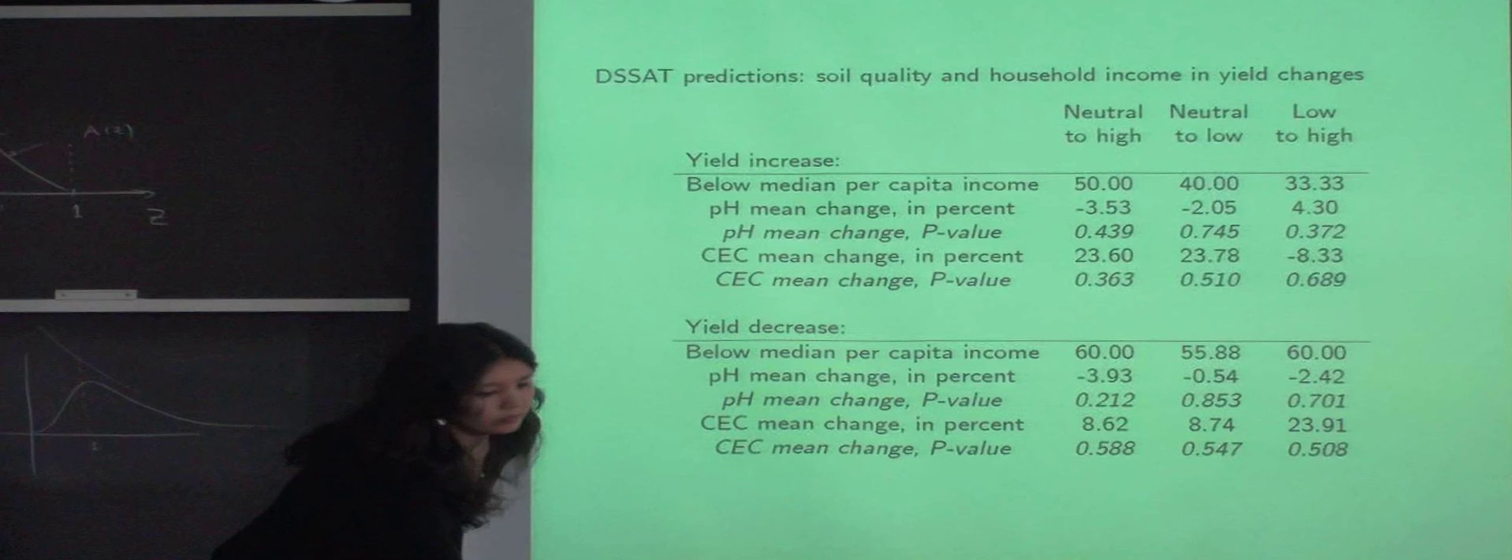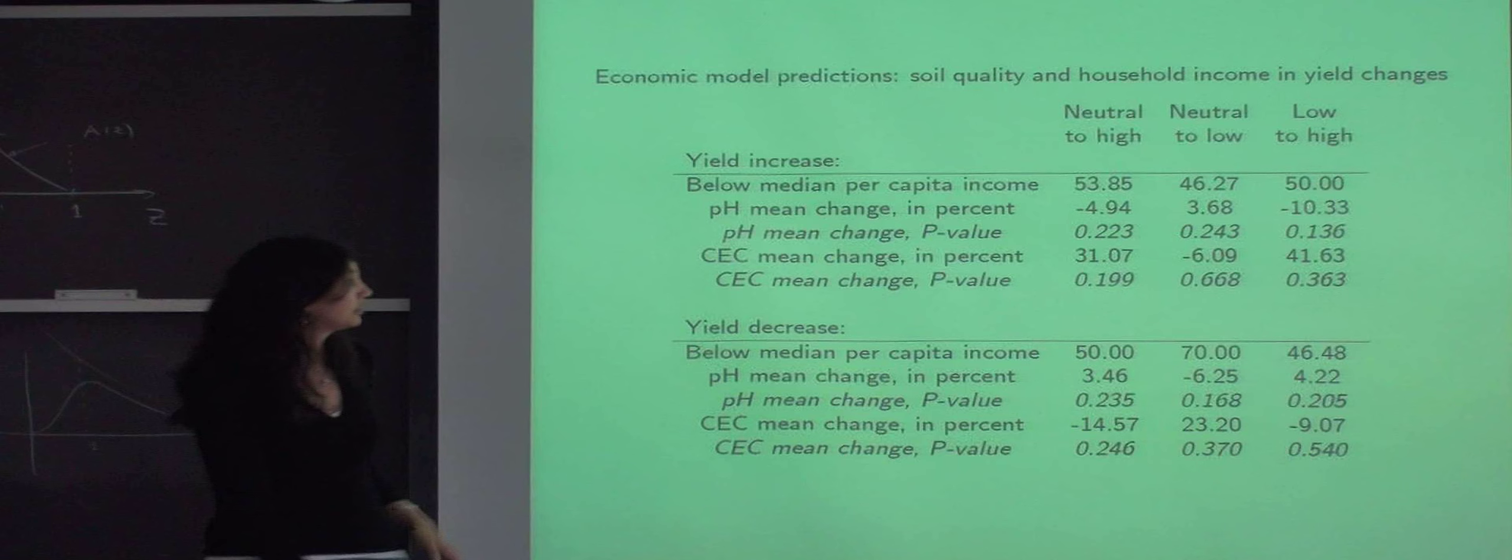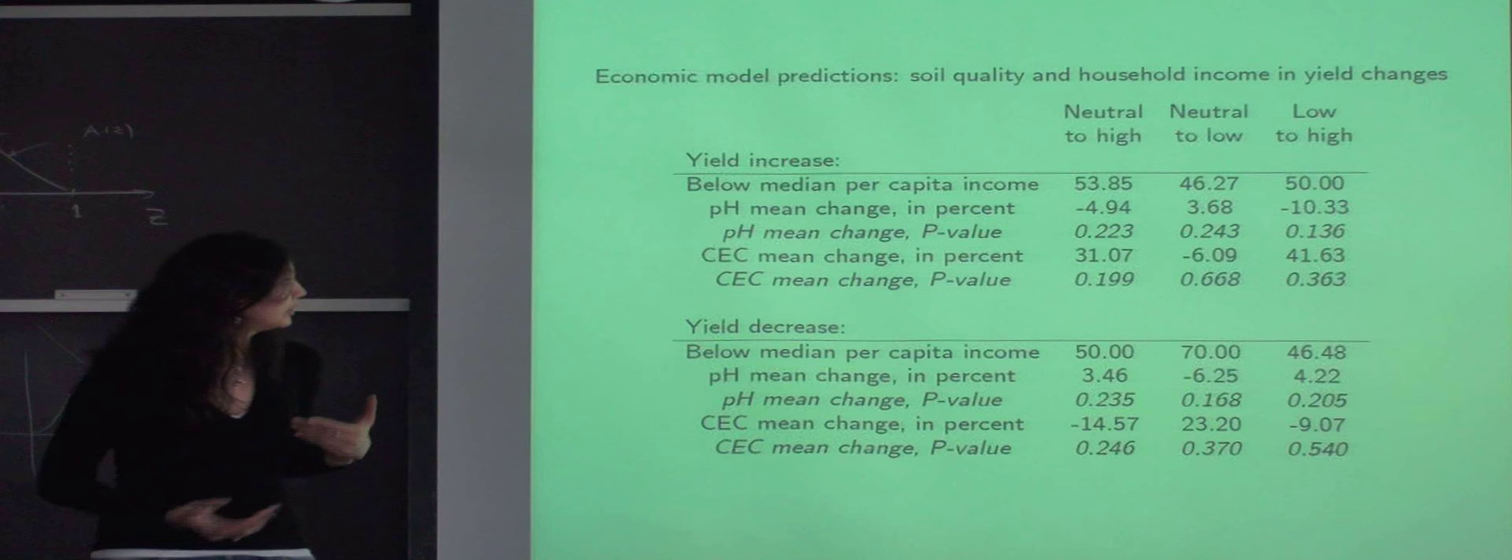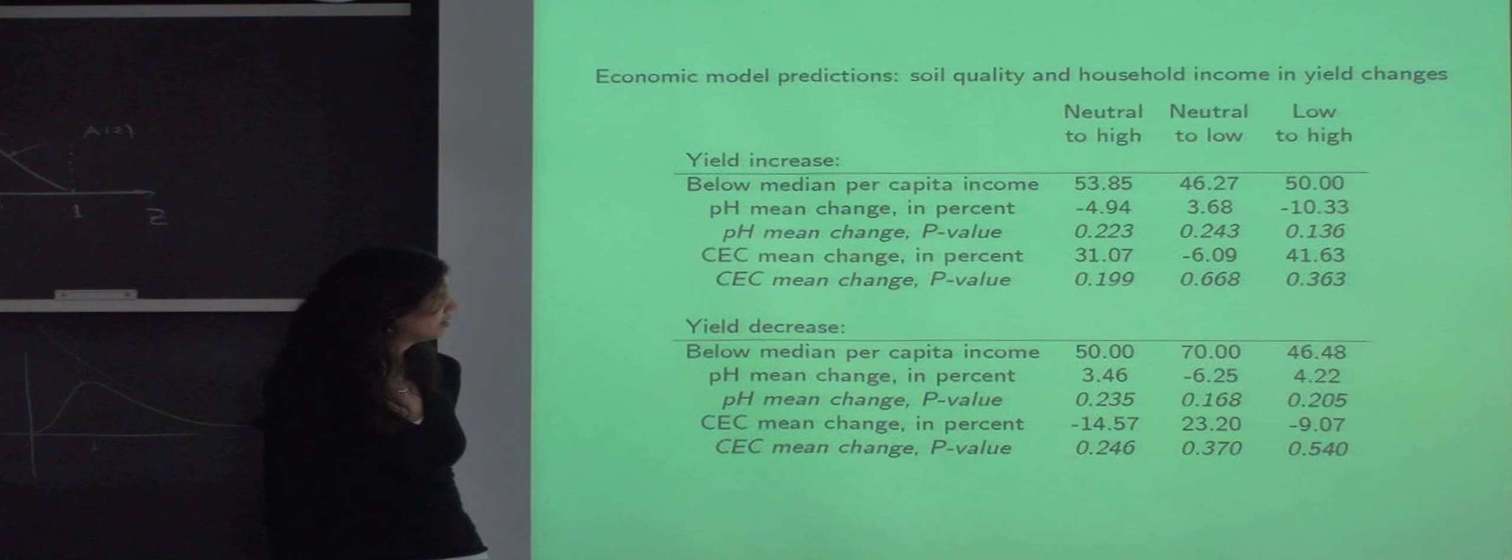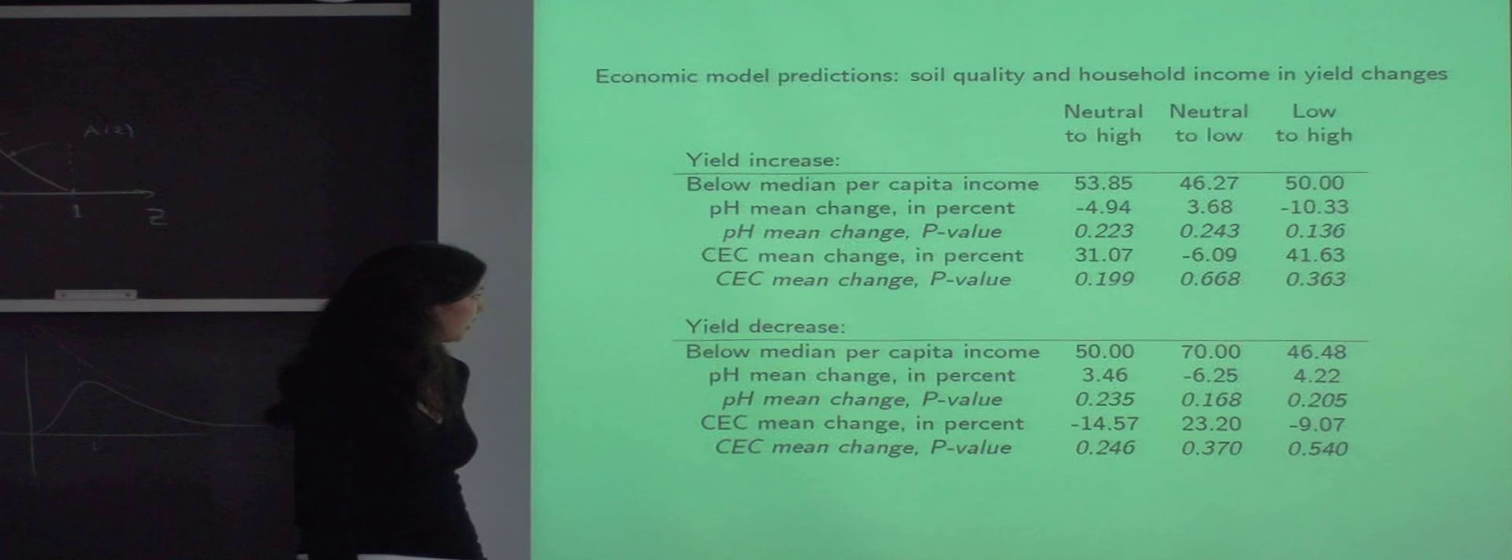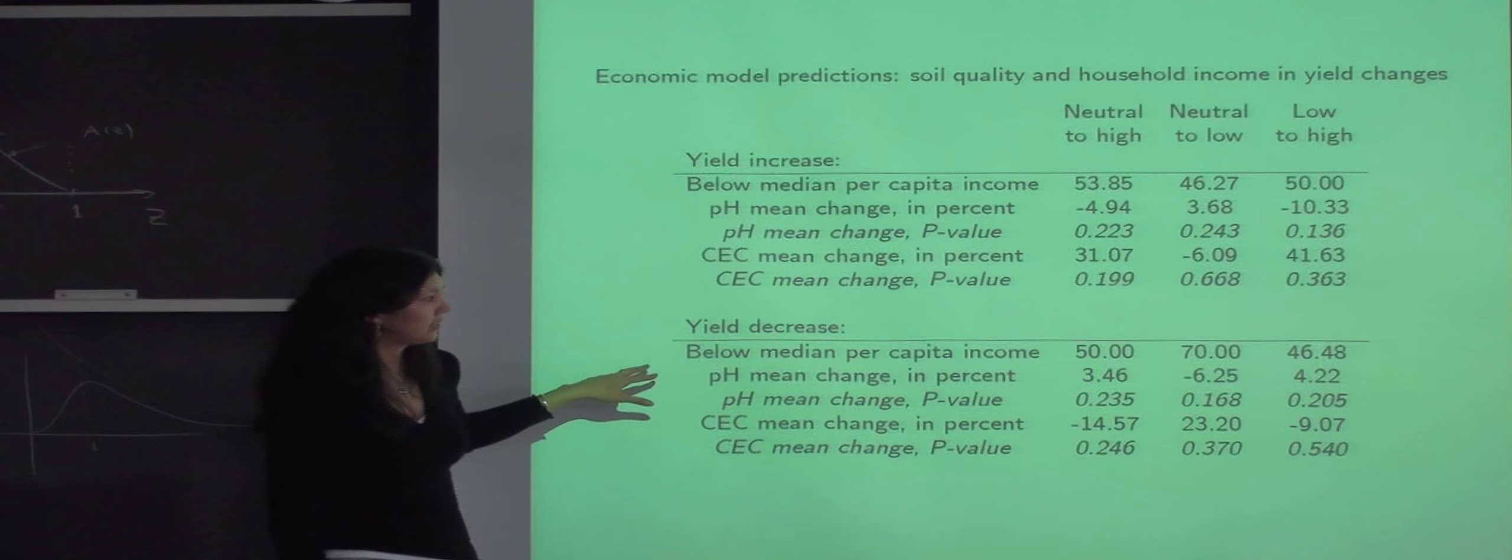And this table does the same comparison for model predictions. We see the same thing that soil quality is not significant at all as being whether farmers' yields go up or down. And farmers' income doesn't really matter too, with one exception, that under low emissions climate change scenario, plots that do experience decrease in rice yields are more likely to belong to kind of poorer households.